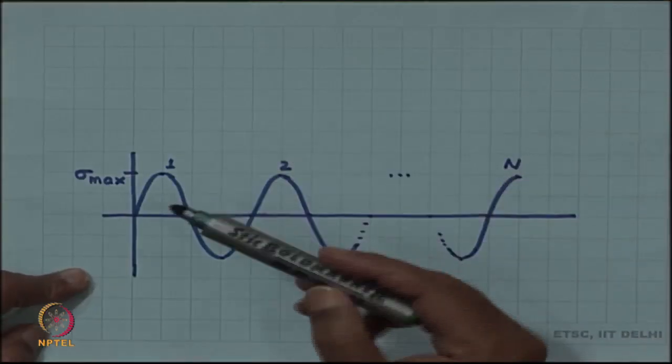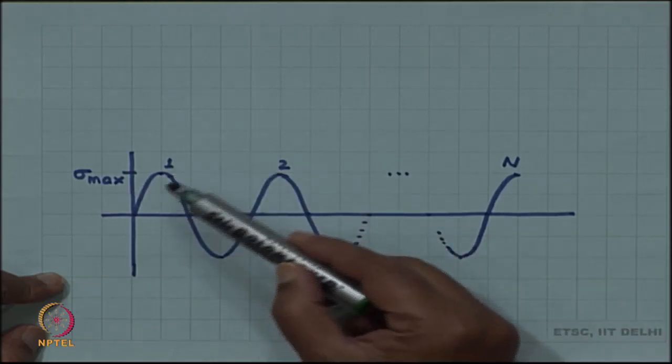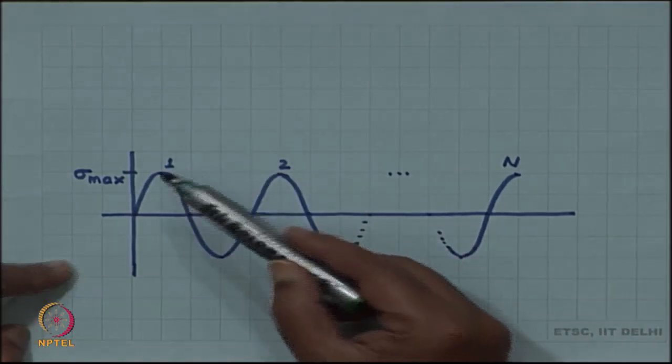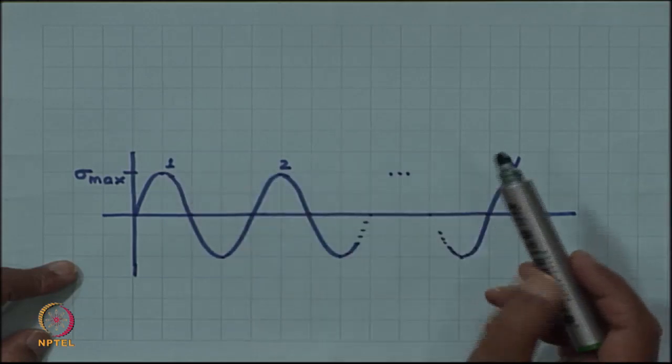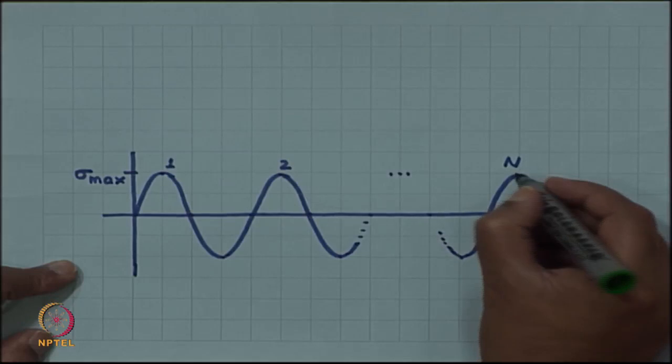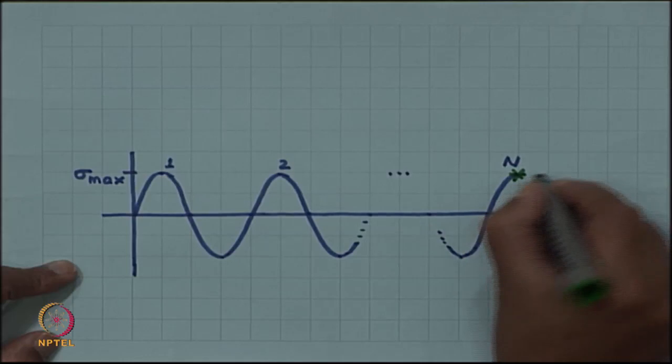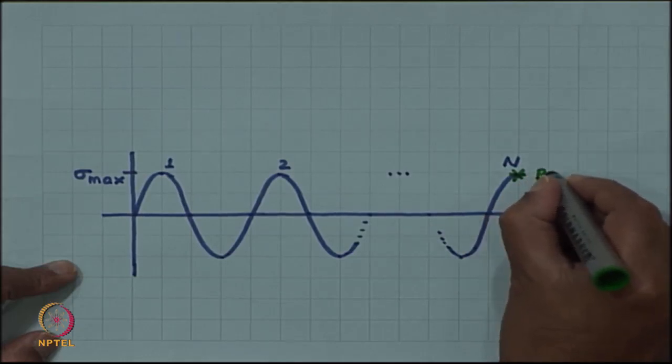Let us now look at this cyclic loading. I have labeled the arrival of maxima as the first maxima, second maxima, and so on. As the cycling is going on, after the nth maximum, the component breaks - there is a fracture.